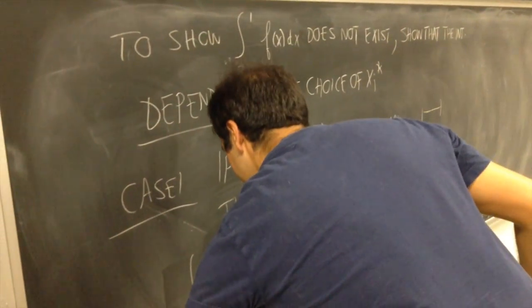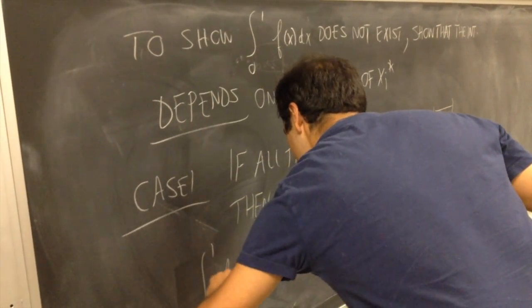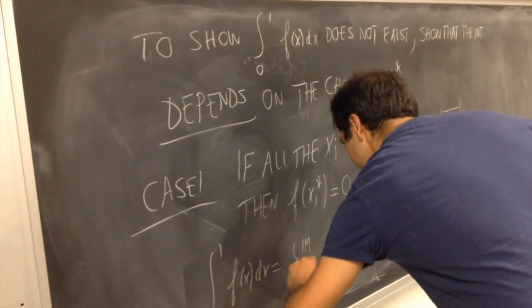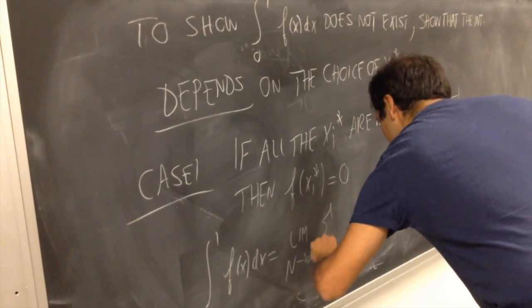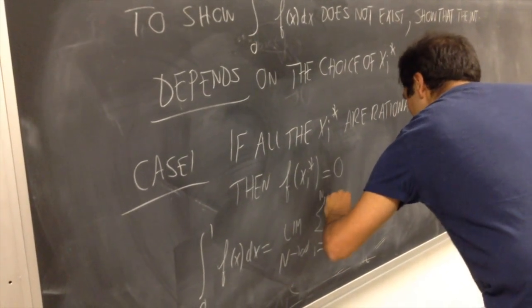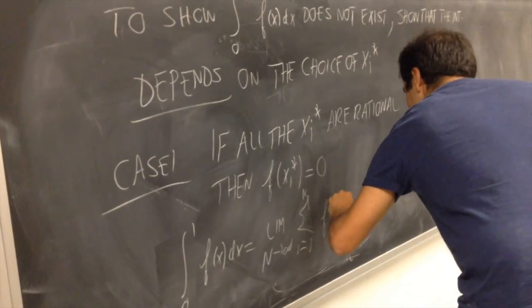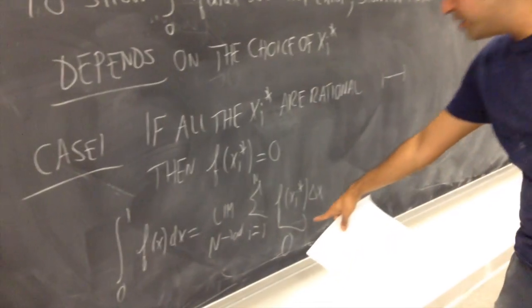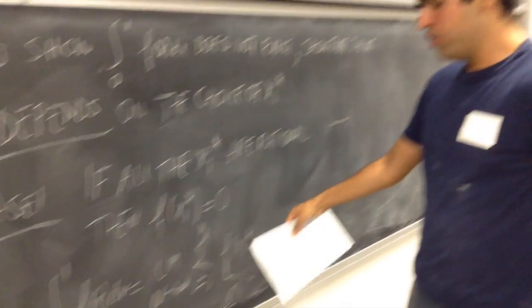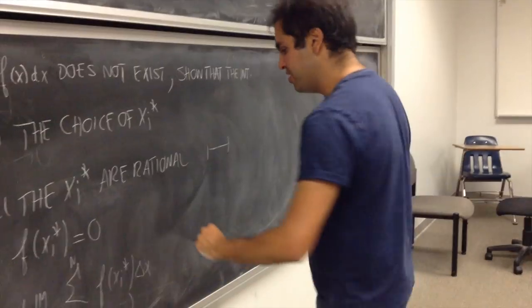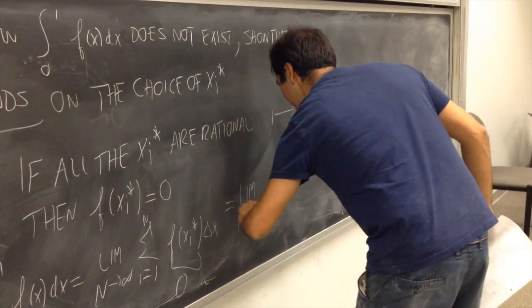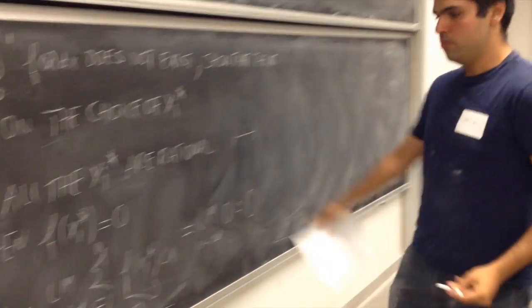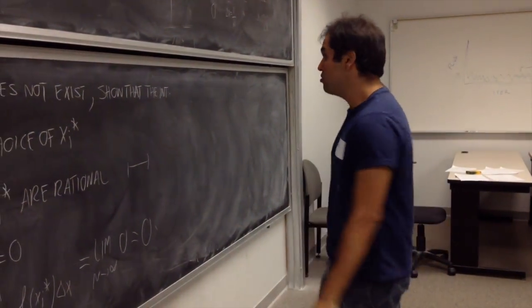f of xi star equals 0. So the integral, by definition, is equal to, again, limit n goes to infinity, sum from 1 to n of f of xi star delta x. But the point is, this becomes 0, therefore, the whole thing becomes 0, therefore, the sum is 0. So really get limit n goes to infinity of 0, and that's 0. So on the one hand, the integral equals 0.